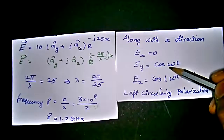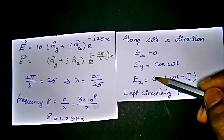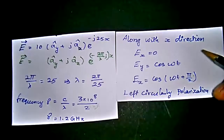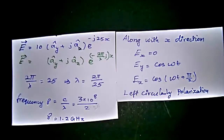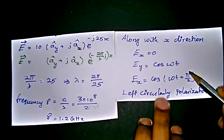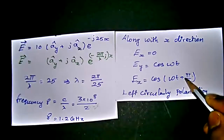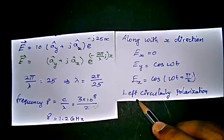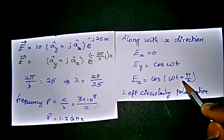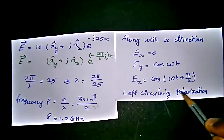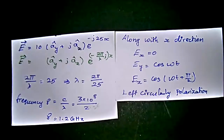Then Ey = cos(ωt) and Ez = cos(ωt + π/2). According to these equations, we can say that it is left circular polarization. The circular polarization comes from the equal magnitudes, and the plus π/2 phase gives us left circular polarization. If we had cos(ωt − π/2) instead, we would have right circularly polarized wave. That's it, thank you. Your comments are welcomed.